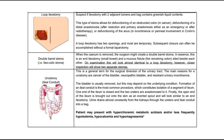For loop ileostomy, suspect this type if there is an ileostomy with two adjacent lumens and the bag contains greenish liquid contents. This type of stoma allows for defunctioning of an obstructed colon, defunctioning of a distal anastomosis, or defunctioning of the anus. A loop ileostomy has two openings and most are temporary; subsequent closure can often be accomplished without a formal laparotomy.